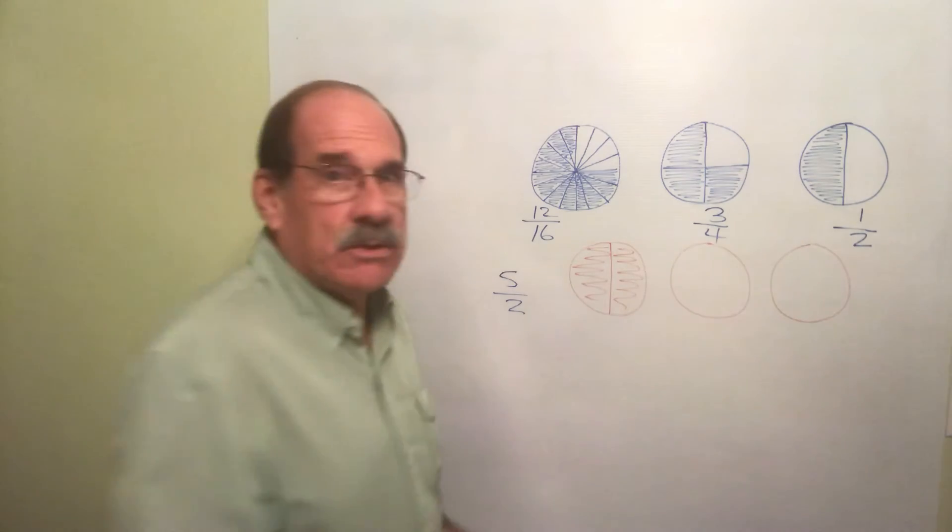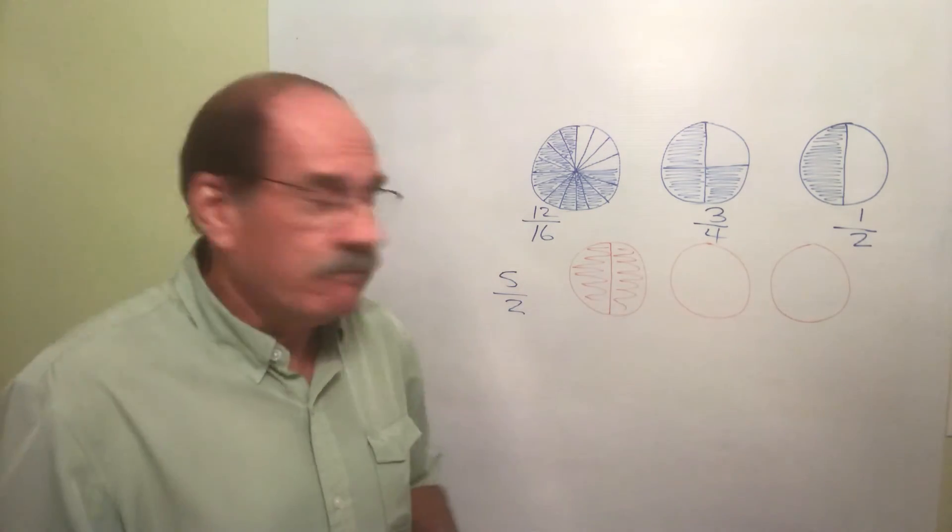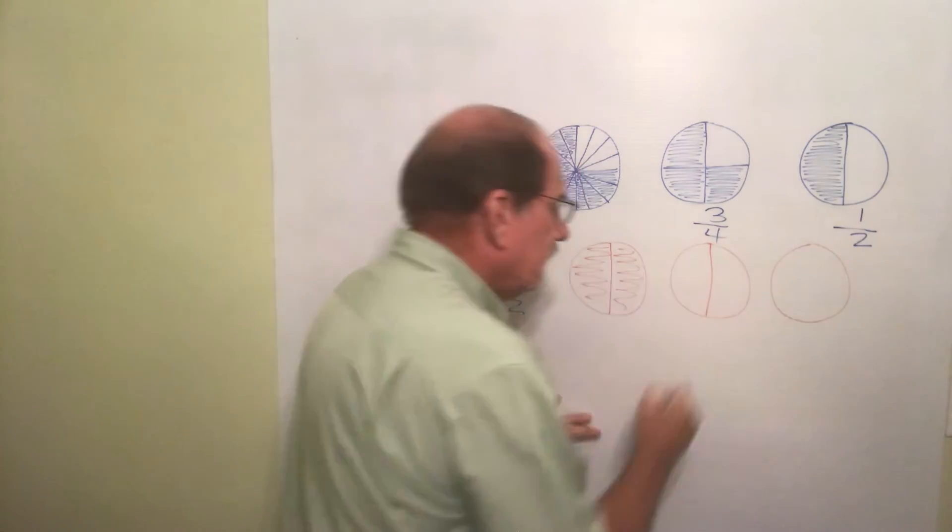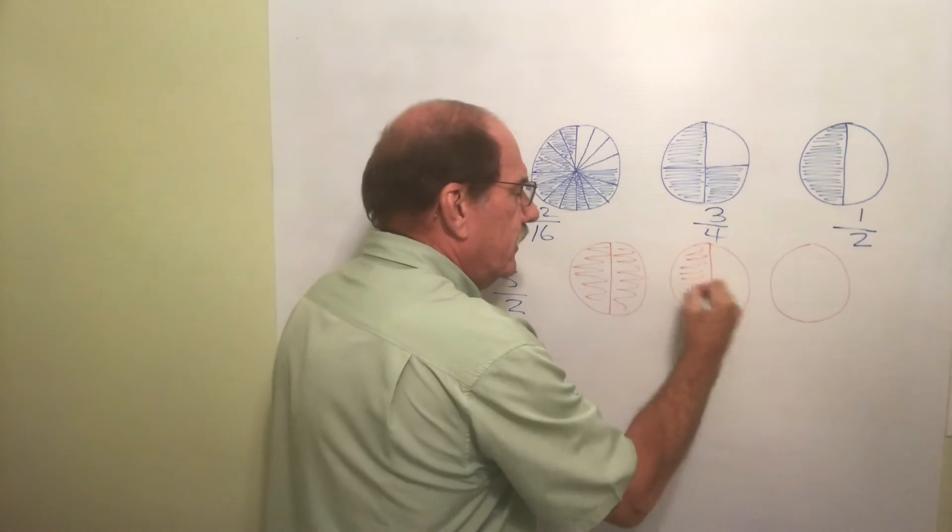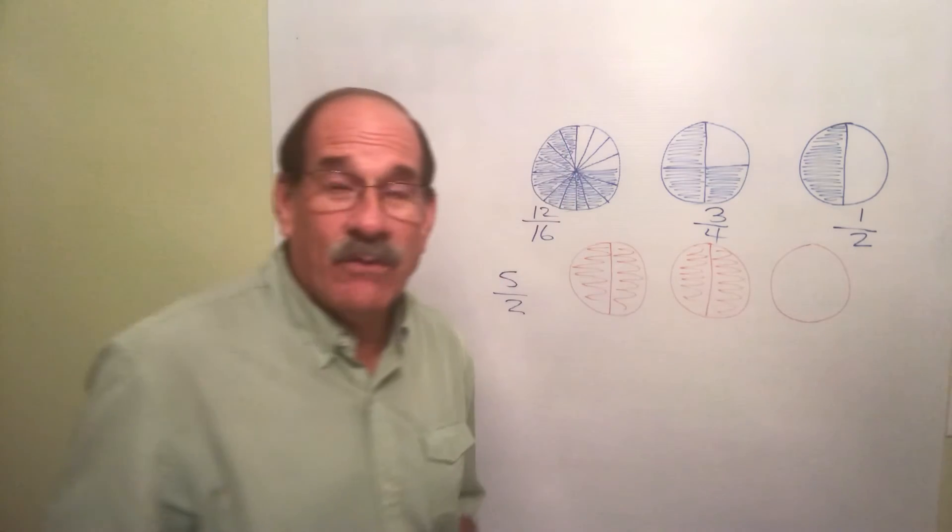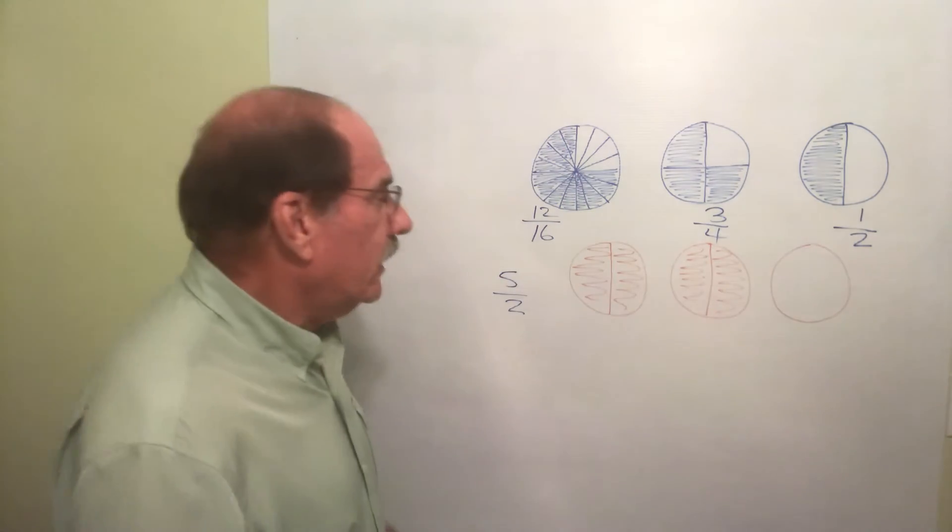But I need five of those pieces. I get this piece - that's one piece. I get this piece - that's two. I need five pieces, that's only two. I get another pizza - I get a second pizza and I cut it in half. I get a third piece, I get a fourth piece.